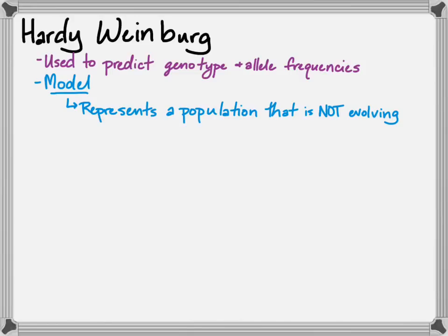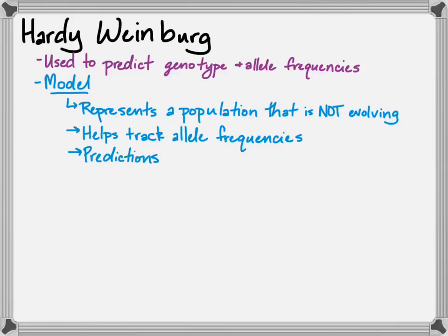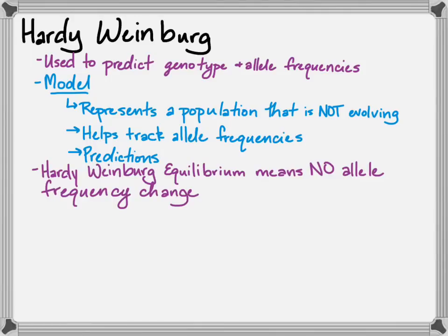We know that populations evolve and allele frequencies change, but you can use Hardy-Weinberg to help track changes in allele frequencies, make predictions about future populations, and make trends more obvious. For a population to have no allele frequency change — meaning they are not evolving at all, which does not happen — it has to meet a number of conditions.